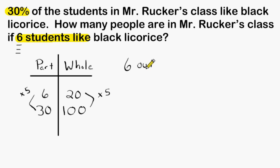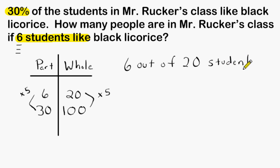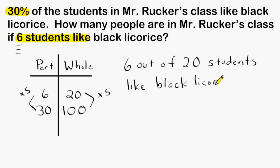So now we know that 6 out of 20 students like black licorice in Mr. Rucker's class. 6 represents part of the class and 20 represents the total number of students in the class.